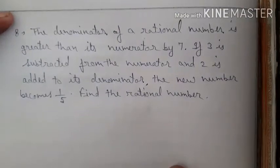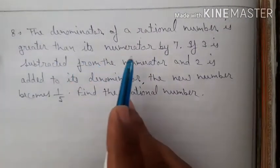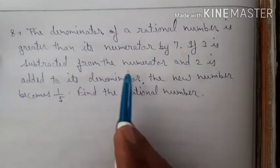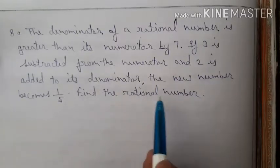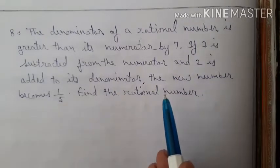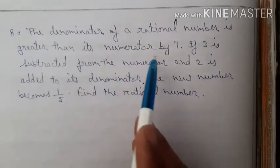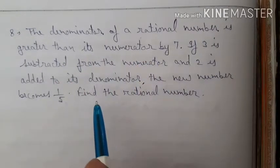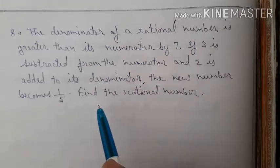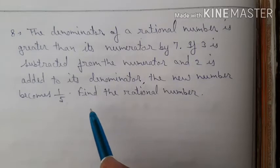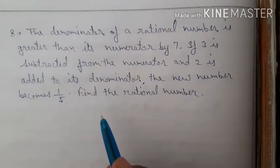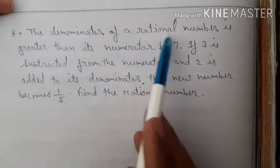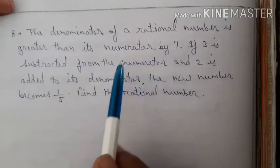Now let us see question number 8: The denominator of a rational number is greater than its numerator by 7. If 3 is subtracted from the numerator and 2 is added to its denominator, the new number becomes 1 by 5. Find the rational number. Here, the numerator is on top and denominator on the bottom in P by Q form.